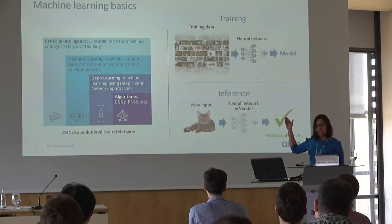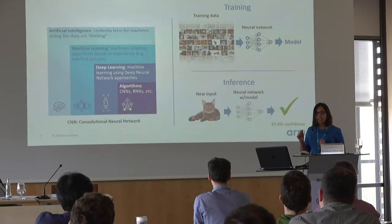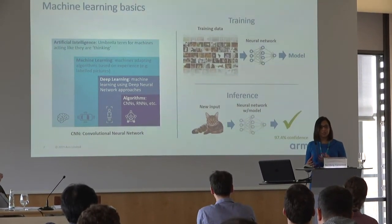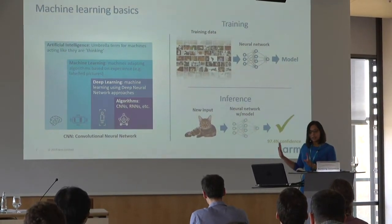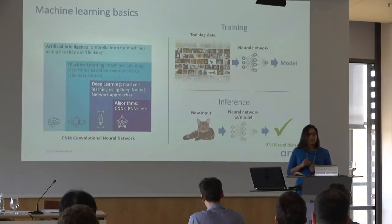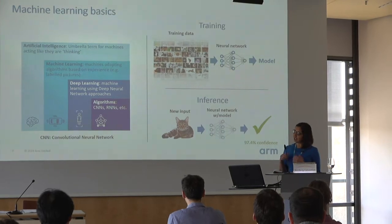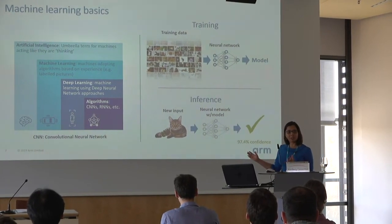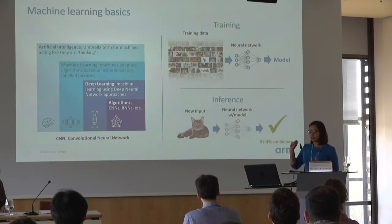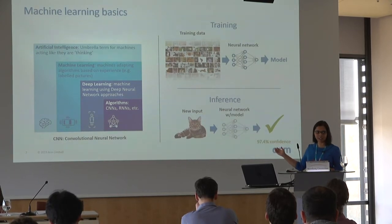Inference is where you deploy this model to your embedded devices — for example, your smart doorbell. You give it a new image, and if it's trained well, at the output it's going to give you the correct answer, like 'this is a cat.' A very important aspect of design is to have an accurate prediction — the example here shows 97% accuracy in prediction. Deep learning-based vision has improved performance accuracy as well as scalability in a very significant way.